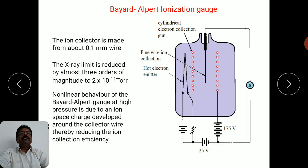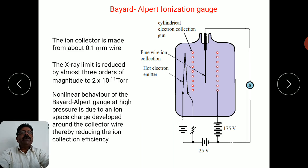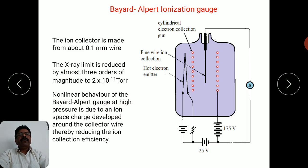There are some features associated with the Bayard-Alpert ionization gauge. The main feature is the non-linear behavior of this gauge at high pressure, which is due to ion space charge developed around the ion collector wire.